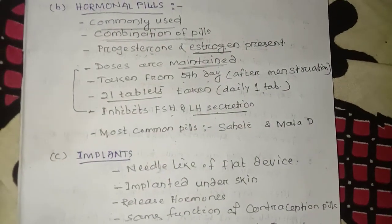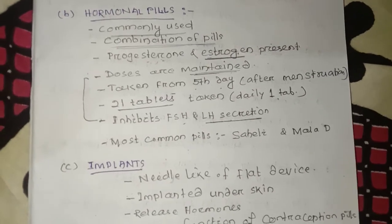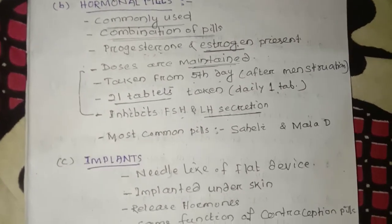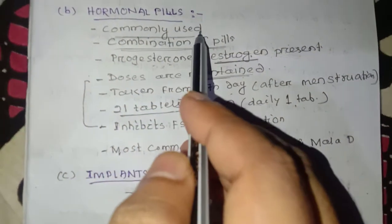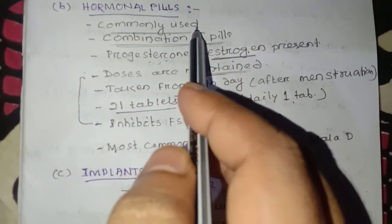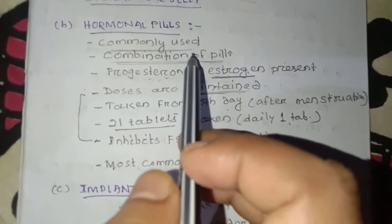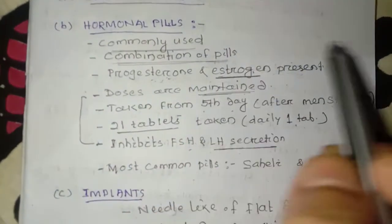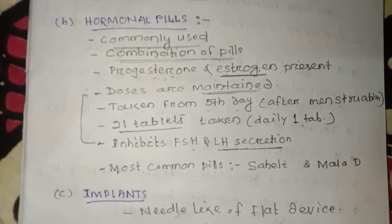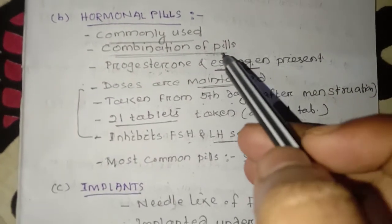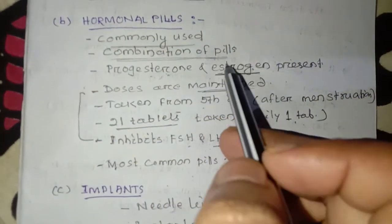Hello and welcome everybody. Today we are going to discuss about the hormonal pill. The chemical method is a common method of contraception, commonly used because it is an easy method — the pill is available in the market, and when you take a dose, it prevents pregnancy.